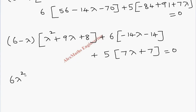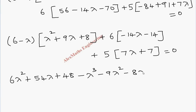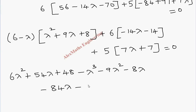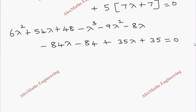Now we multiply 6 inside: 6 lambda squared plus 54 lambda plus 48, minus lambda cubed minus 9 lambda squared minus 8 lambda. Then multiplying 6 inside again: minus 84 lambda minus 84, then plus 35 lambda plus 35, equal to zero.